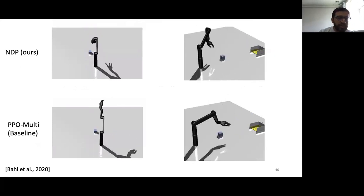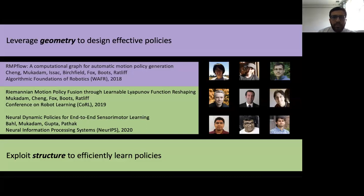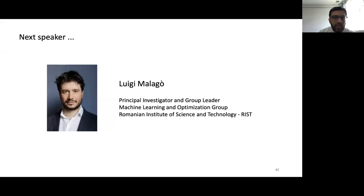What we saw was that we can actually leverage geometry in interesting ways in both designing better policies as well as inducing structure in the form of trees to induce a useful structure that the policies can be easily designed and then actually subsequently leverage that structure to do end-to-end learning of these policies in more data efficient ways. I just want to list these papers that I talked about here and acknowledge all my collaborators on these works. Before I end, I want to introduce the next speaker, Luigi Malago, who is a PI and group leader at Romanian Institute of Science and Technology and works on topics like differentiable differential geometry, optimization and machine learning. Thank you.